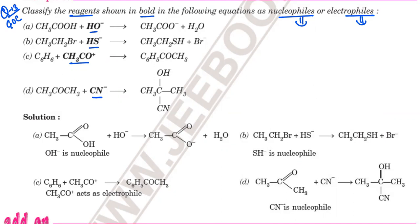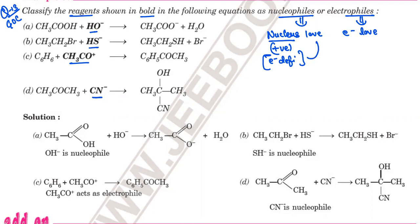The suffix 'phile' means loving. If a species loves the nucleus — which carries positive charge or is electron deficient — then the species that is attracted to it must itself be electron rich. Opposite charges attract, so the nucleus is electron deficient, but the nucleophile is electron rich. Therefore, the nucleophile attracts electron-deficient species. The nucleophile is electron-rich, and so it carries a negative charge or lone pairs.